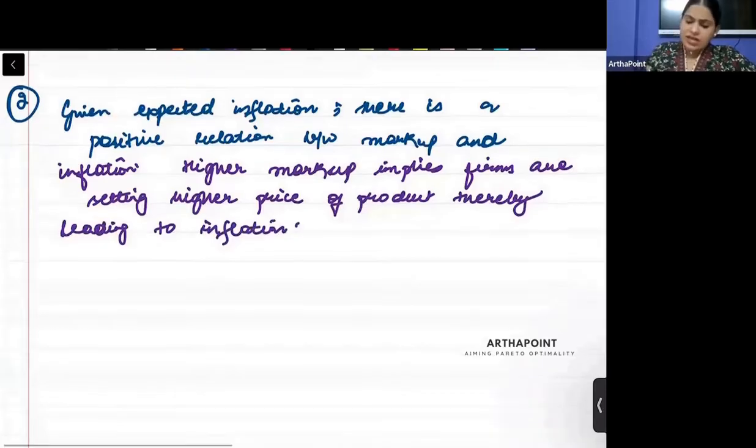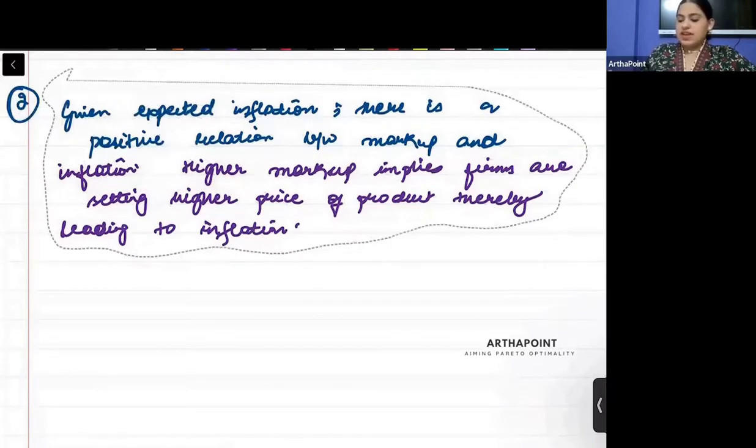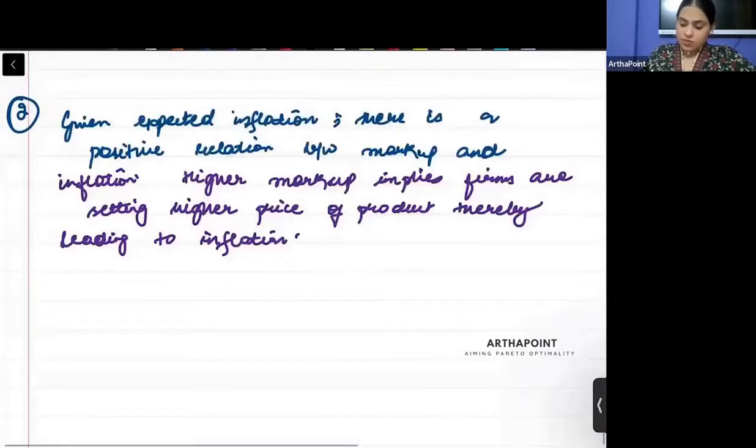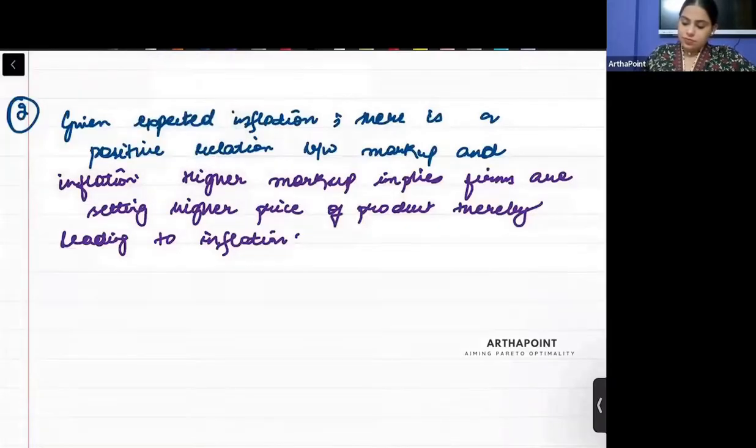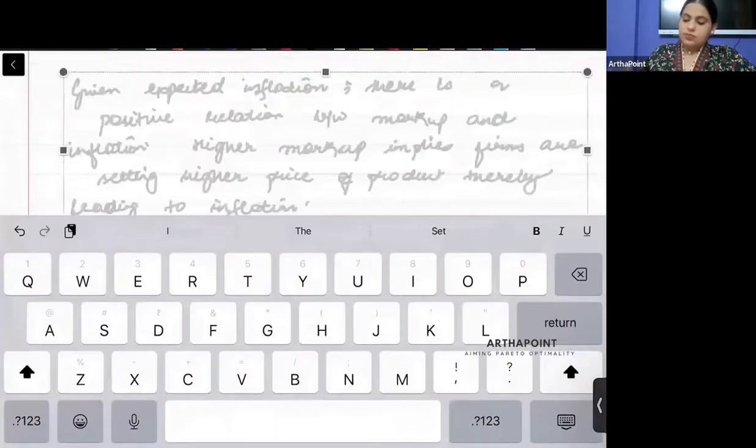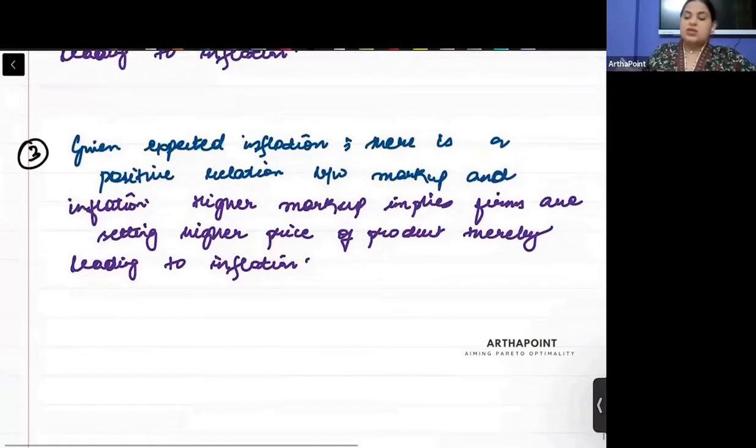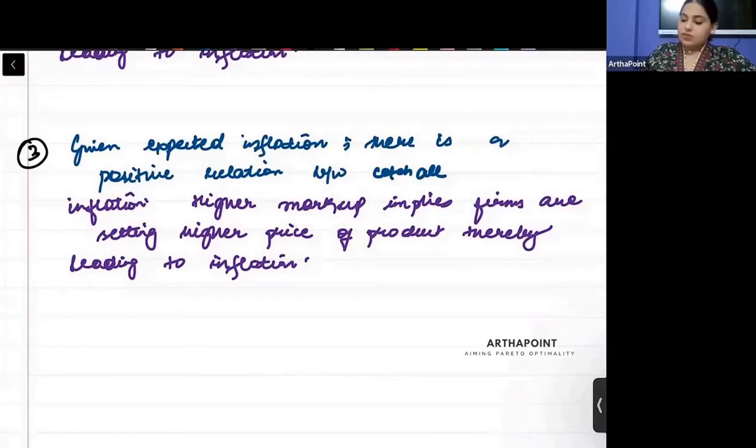But the same, exactly same, you have to write for your z catchall variable. So let me just copy this. You please make a different point. So we will write the third point. Okay. So the third point is this. Given expected inflation, there is a positive relationship between the catchall variable and z.